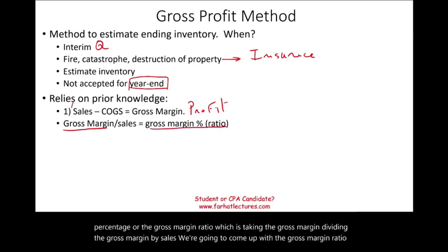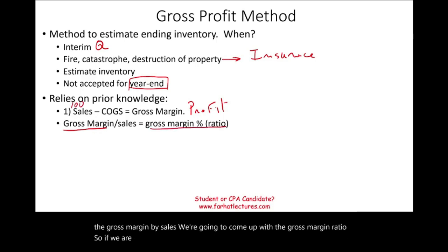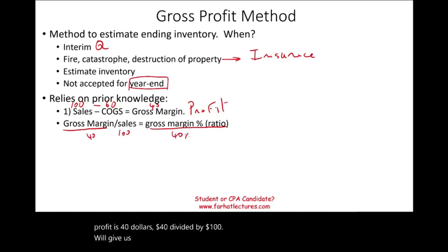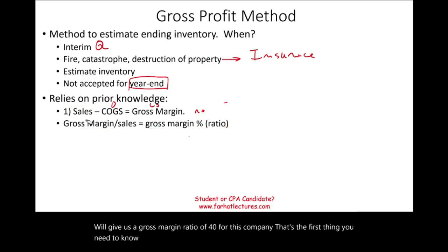For example, if we have $100 in sales and $60 in cost, the gross profit is $40. $40 divided by $100 gives us a gross margin ratio of 40% for this company. That's the first thing you need to know about this method — how to compute the gross margin percentage.